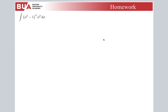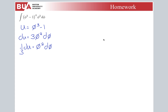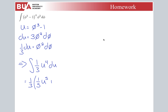Bonus question: this is just a simple u-sub. Let u = φ³ − 1, then du = 3φ² dφ, or (1/3) du = φ² dφ. The integral becomes (1/3) ∫ u⁴ du. Pulling out the 1/3: (1/3)(1/5) u⁵ + C = (1/15)(φ³ − 1)⁵ + C.